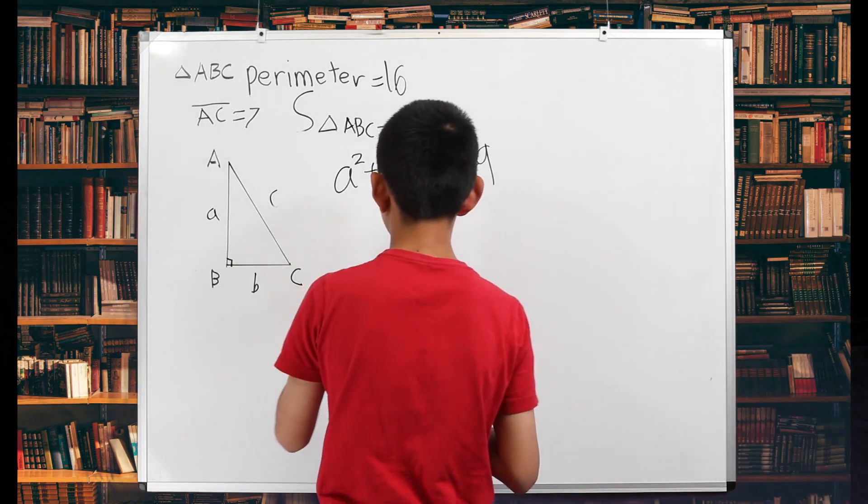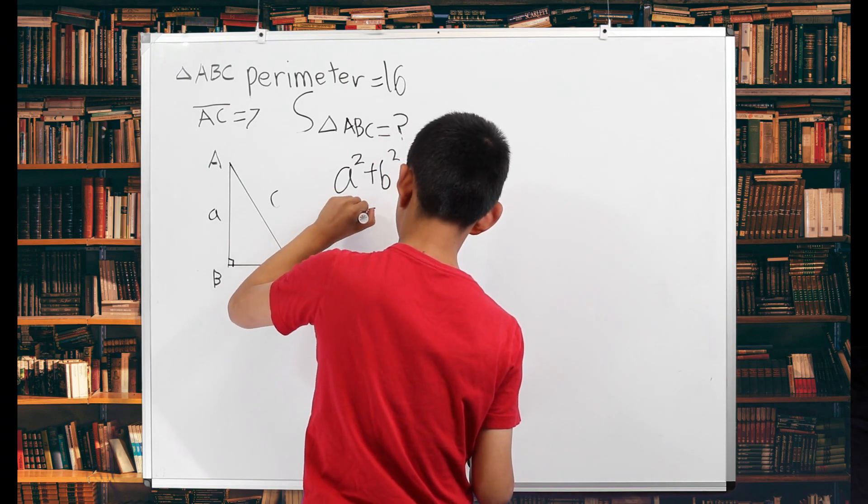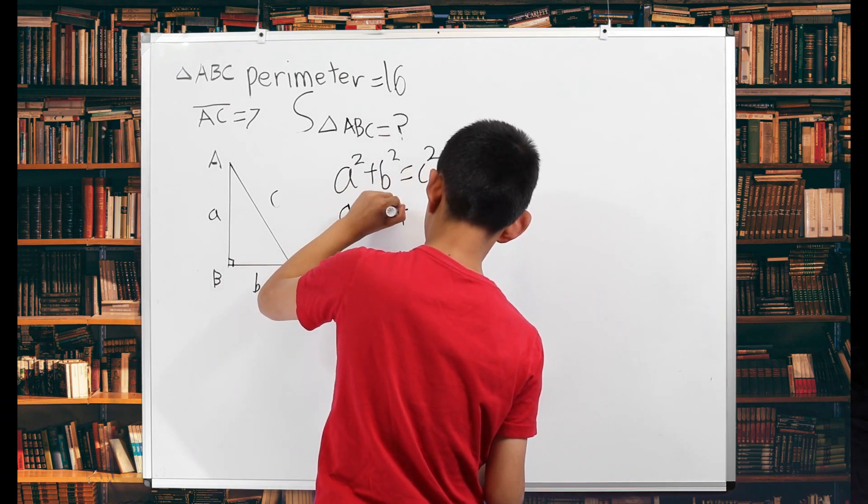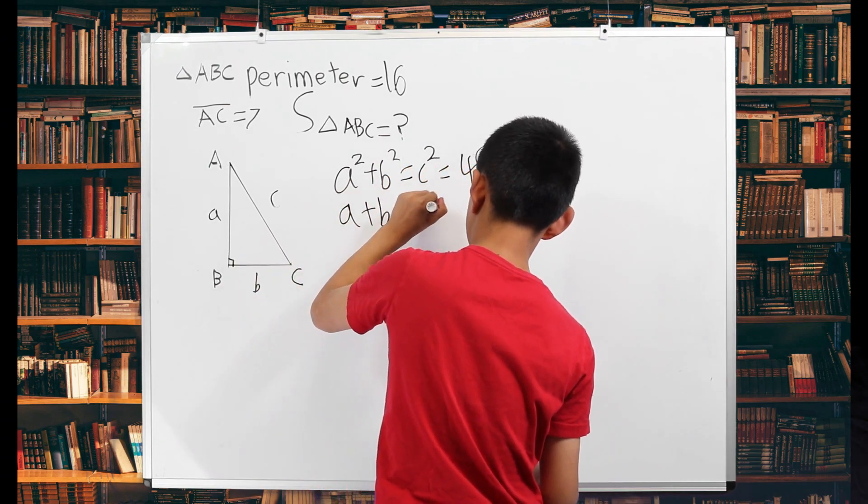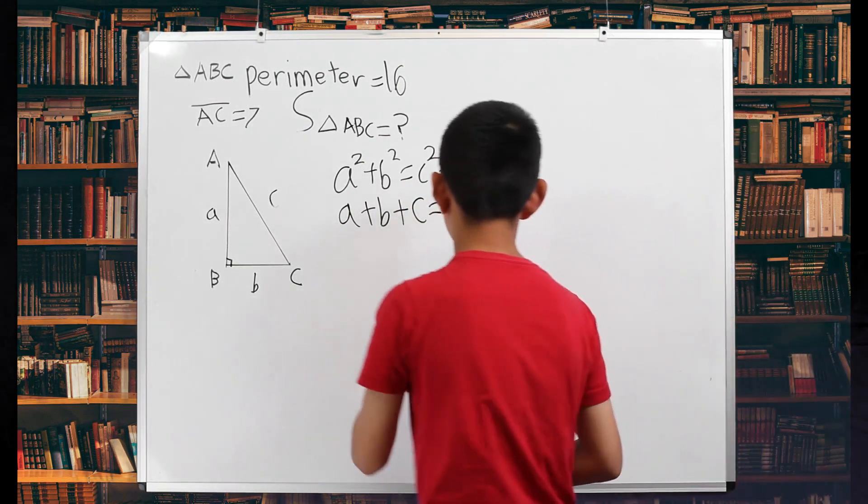The second equation is about the perimeter. A plus B plus C is 16, as stated up there. So now,